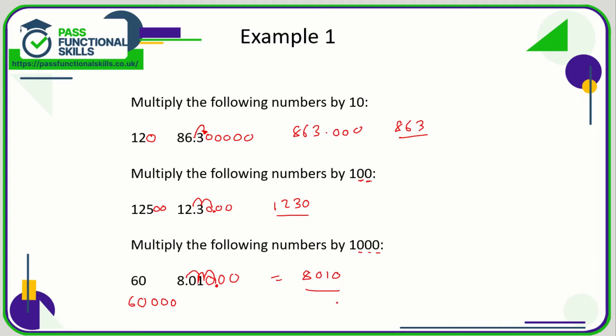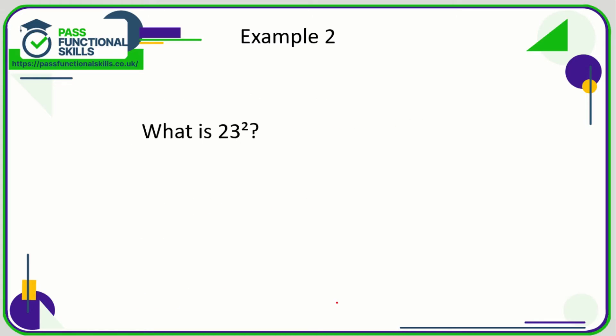23 squared, or 23 to the power of two, that means 23 multiplied by 23. Which maybe you can do on a calculator. If not, use long multiplication.